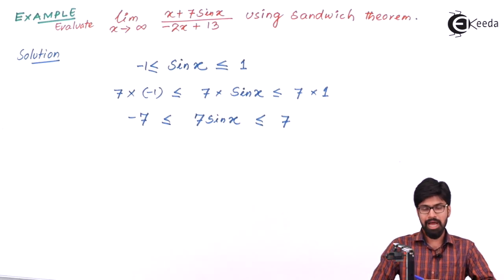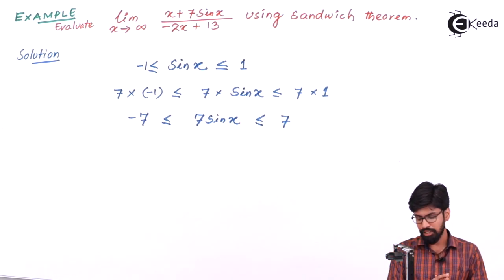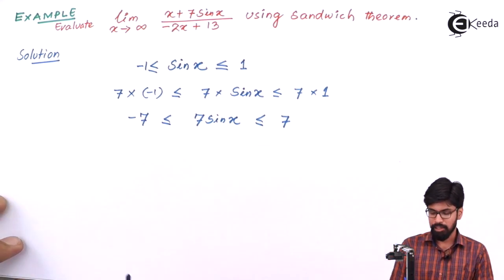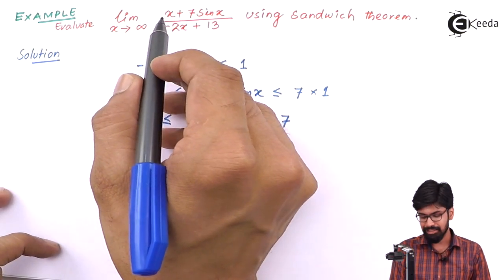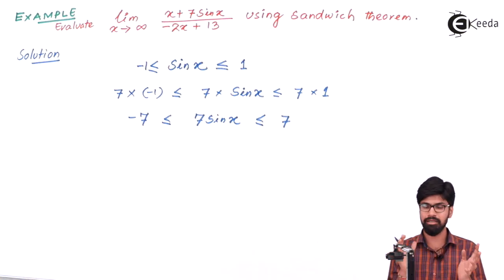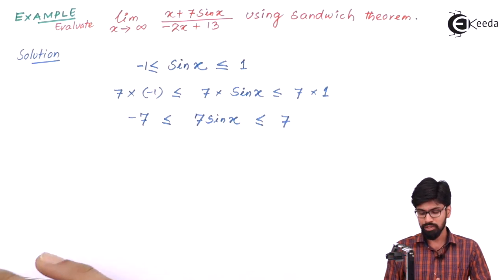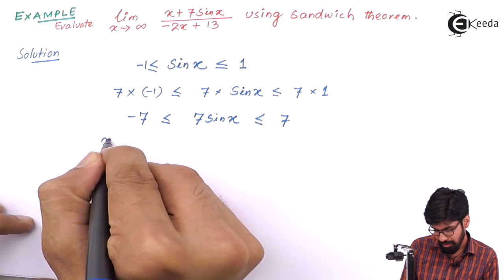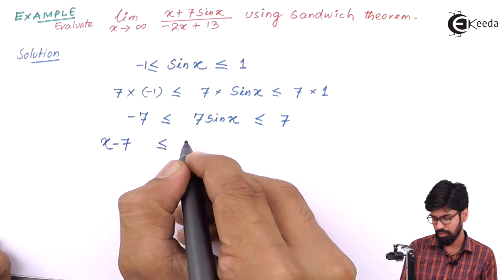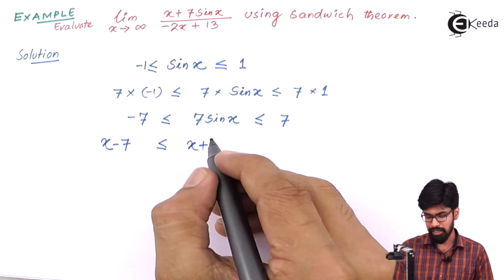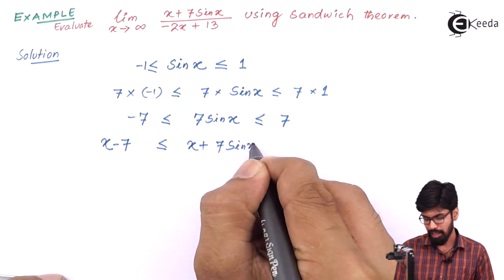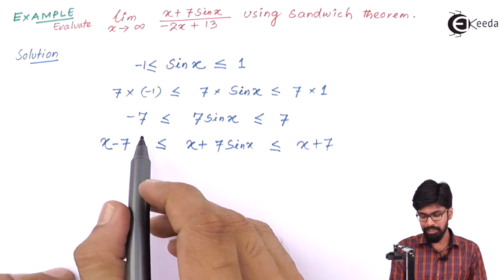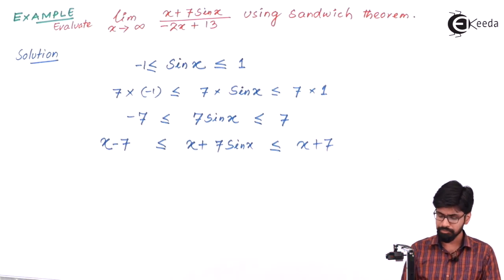Now, if we add a positive quantity to all terms of an inequality, the inequality also remains the same. Here, when x approaches infinity, x will be a large positive number. So if we add x to all three terms, we get: x - 7 ≤ x + 7 sin x ≤ x + 7. The inequality remains the same.